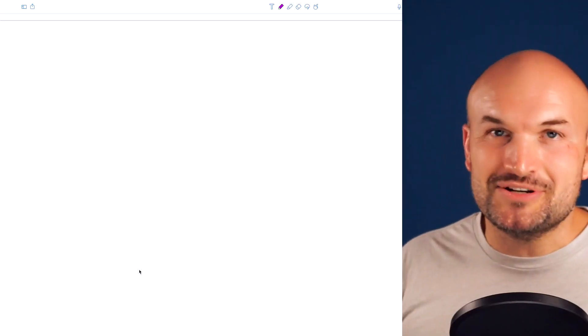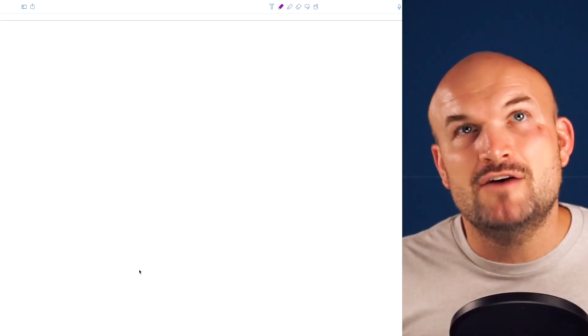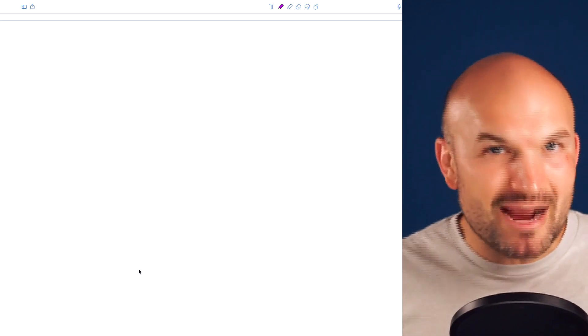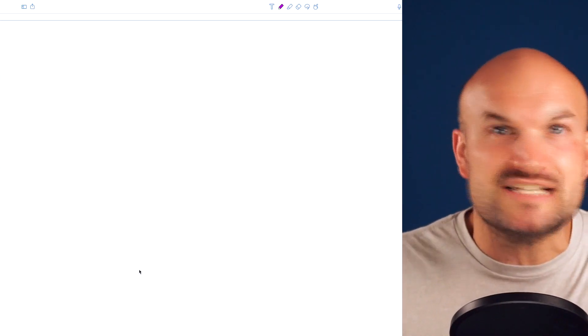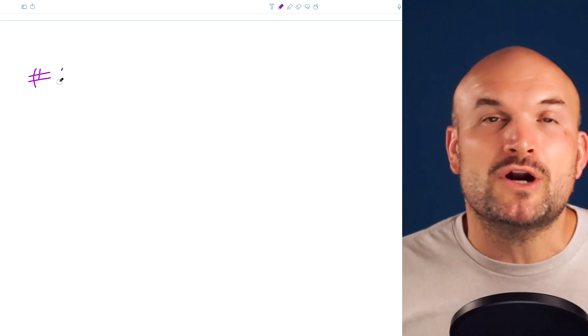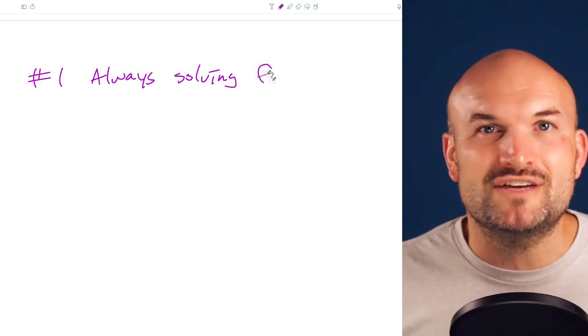Now, the first mistake that I see students make time and time again is always trying to solve for y. And I think this stems from when we first introduced solving a system of equations, we deal with graphing. When we're graphing a linear equation, we have it as a y equals. So when students want to use substitution or even elimination, they're always solving for y. So that is the first mistake. Stop solving for y.